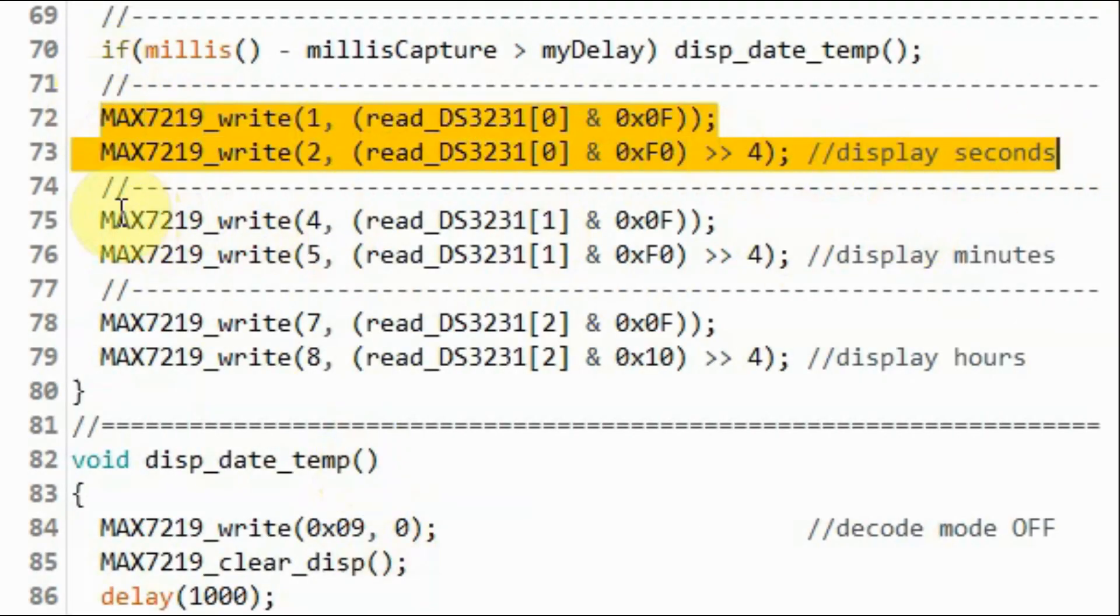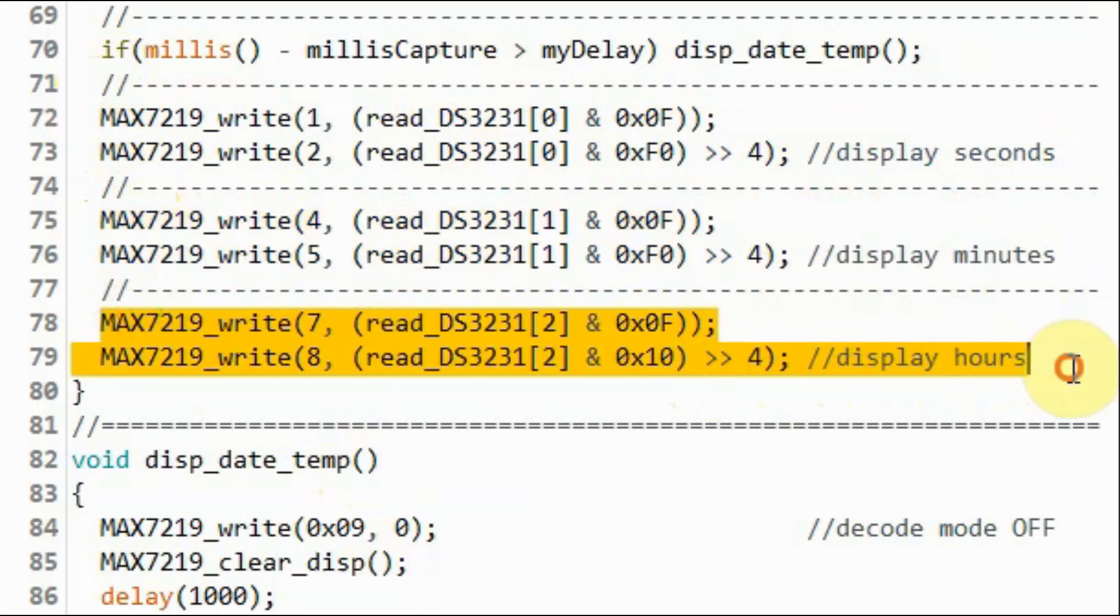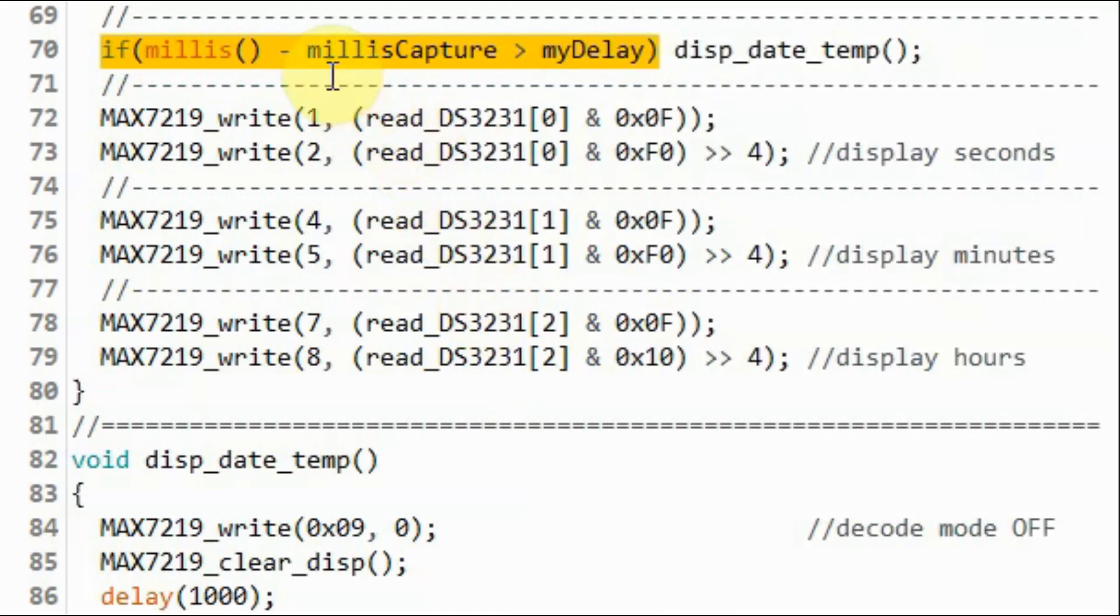Next, we display the seconds, and then the minutes, and then the hours on the MAX7019 module. Every 30 seconds, this if statement becomes true, and the program jumps to this function.